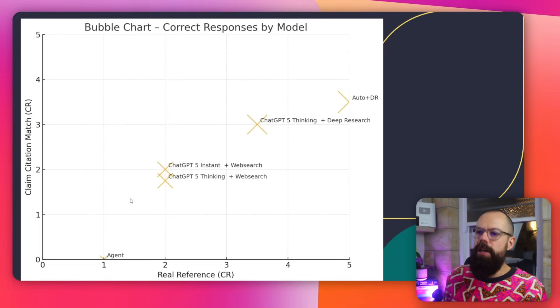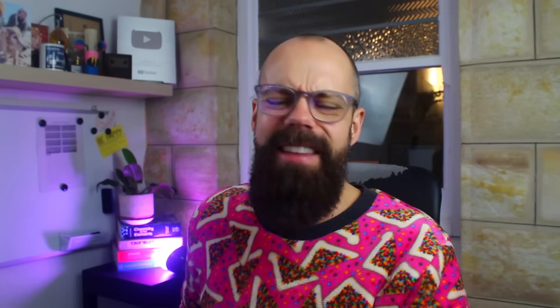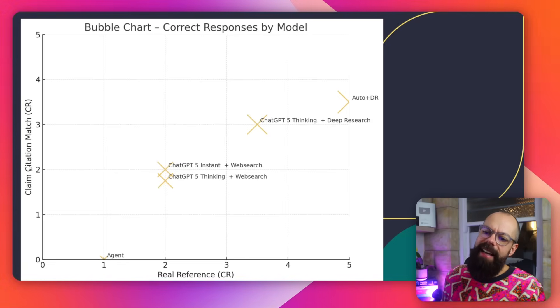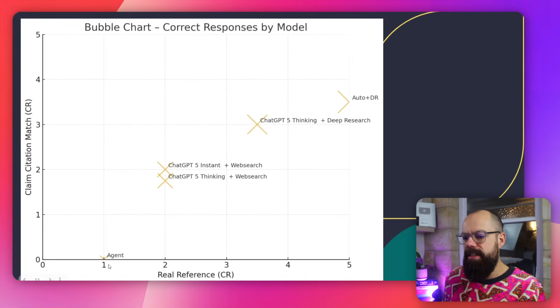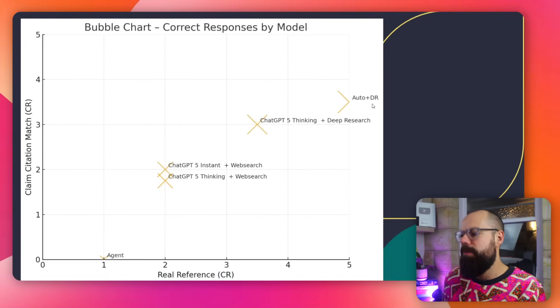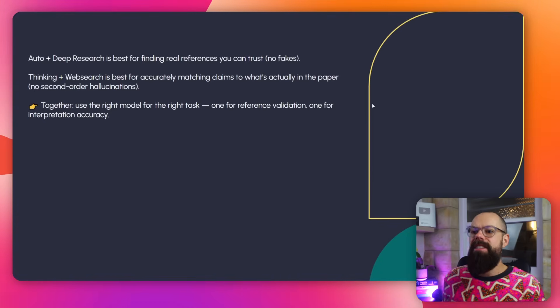Always turn on deep research. On the summary chart — real references versus correct claim citation match — stay away from Agent. If you want, you can use Thinking, but Auto works even better. ChatGPT 5 Thinking plus deep research and Auto plus deep research are your best options. The take-home message is Auto and deep research. There are also loads of specific AI tools that are even better for academia and research, so stay tuned — I'll be stress testing those soon so you know which one is worth your money and time and isn't just going to lie to you.